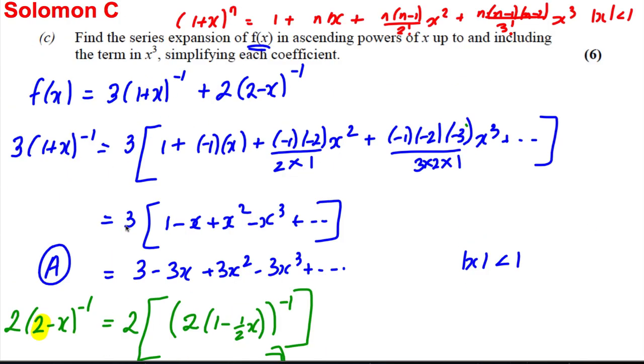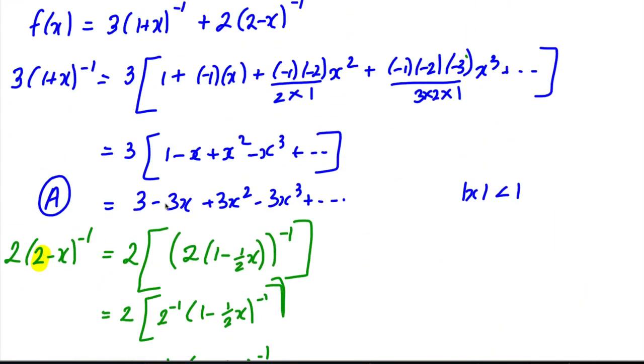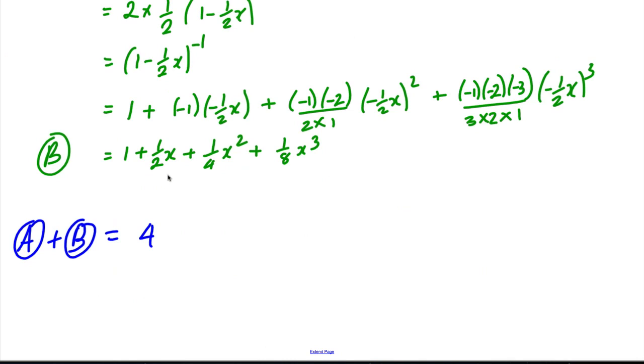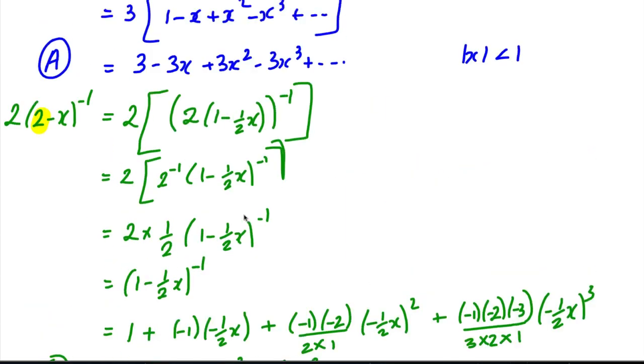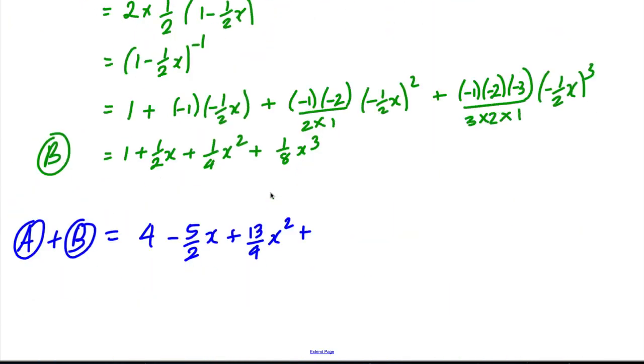And that's going to be equal to, well, I've got 3 here plus 1 which is 4. I've got negative 3 plus 1 half, so just use the calculator if you're not good with fractions. Negative 3 plus 1 half, which is going to be negative 5 over 2 x. And then I've got 3 plus 1 quarter, which is 13 over 4 x squared. And the last one I've got negative 3 plus 1 eighth. So negative 3 plus 1 eighth, and I get myself that's going to be equal to negative 23 over 8 x cubed.